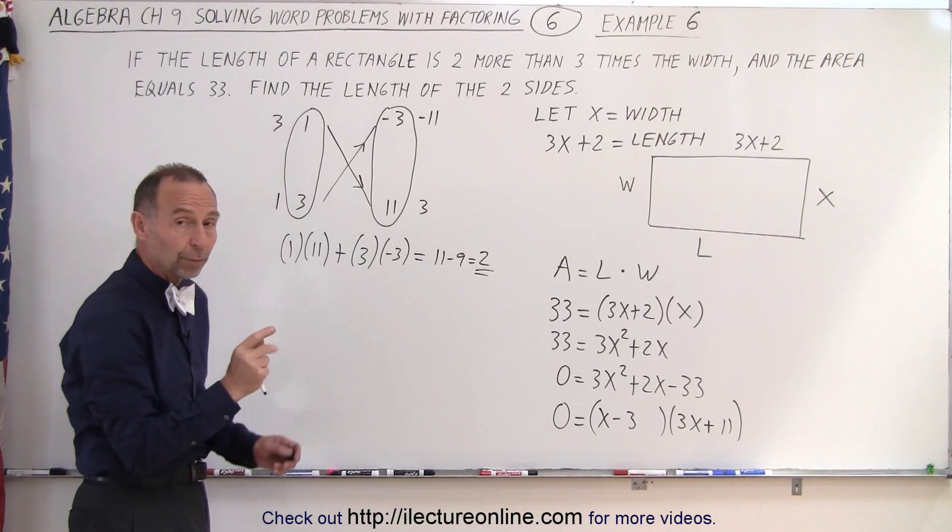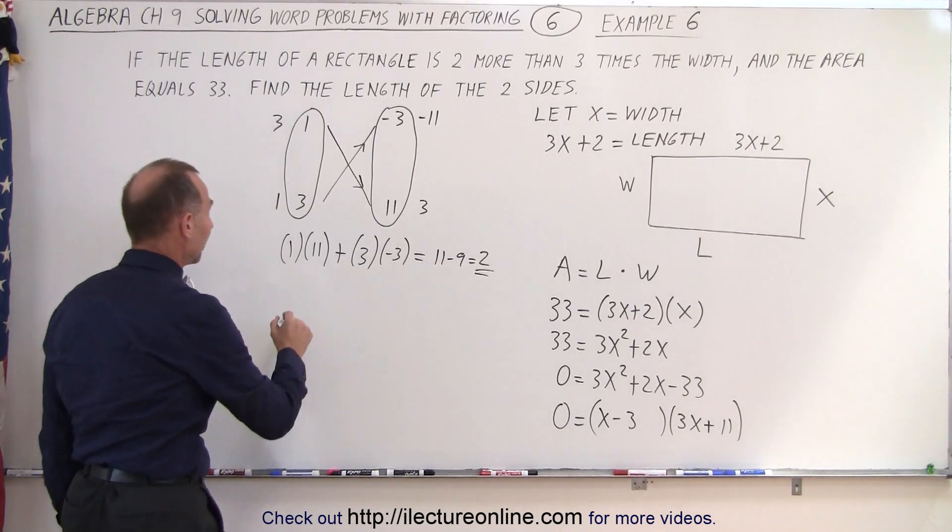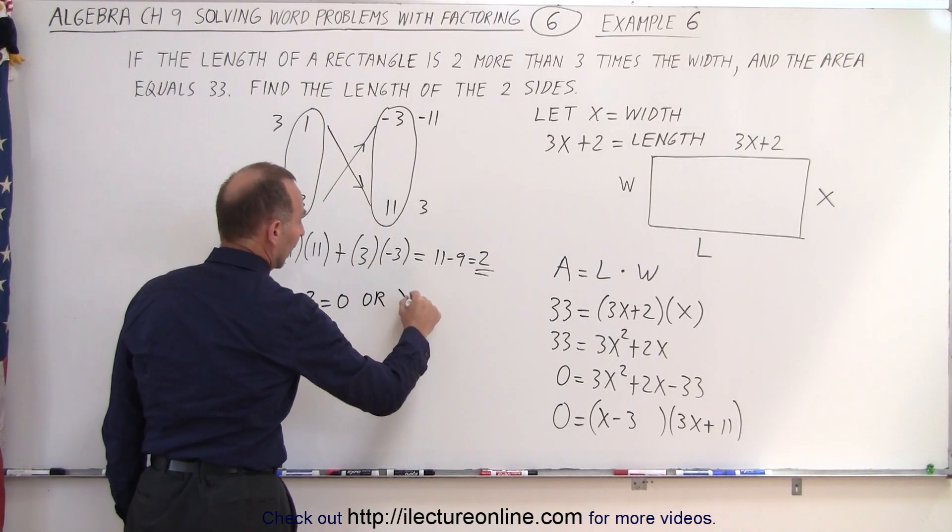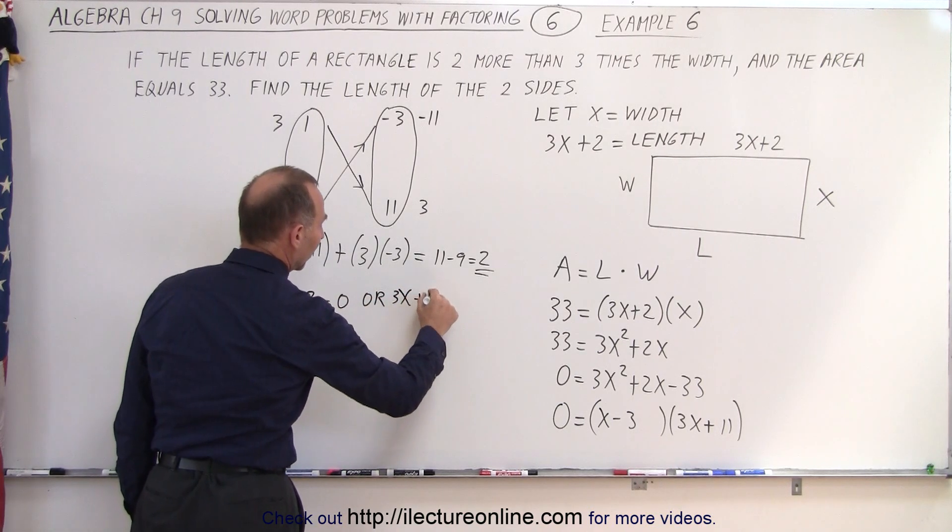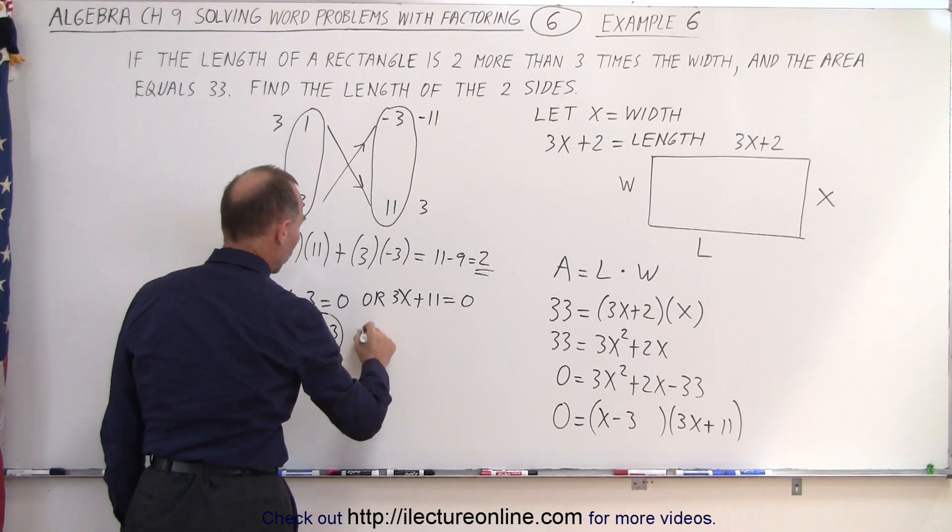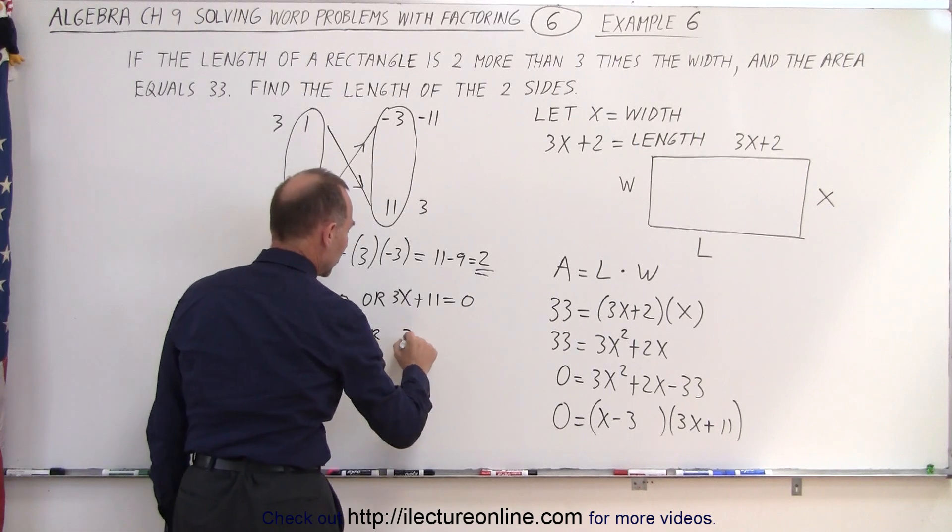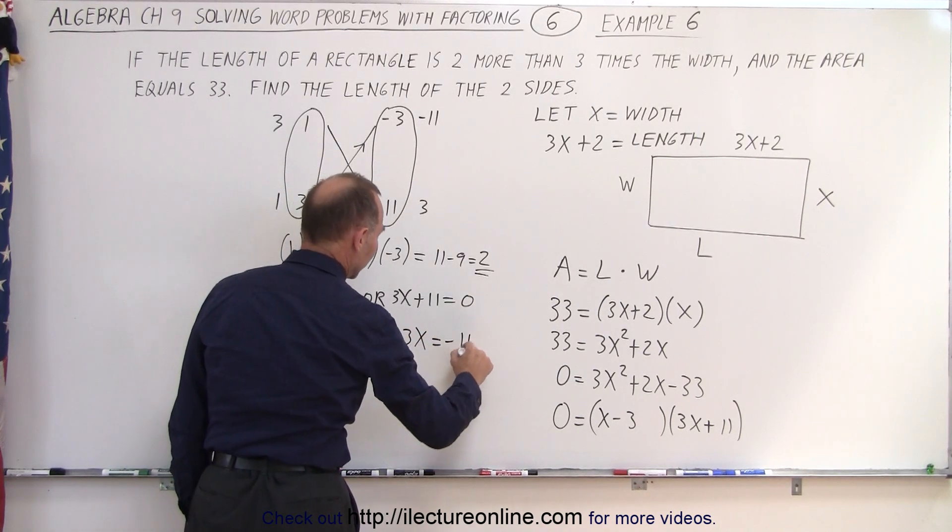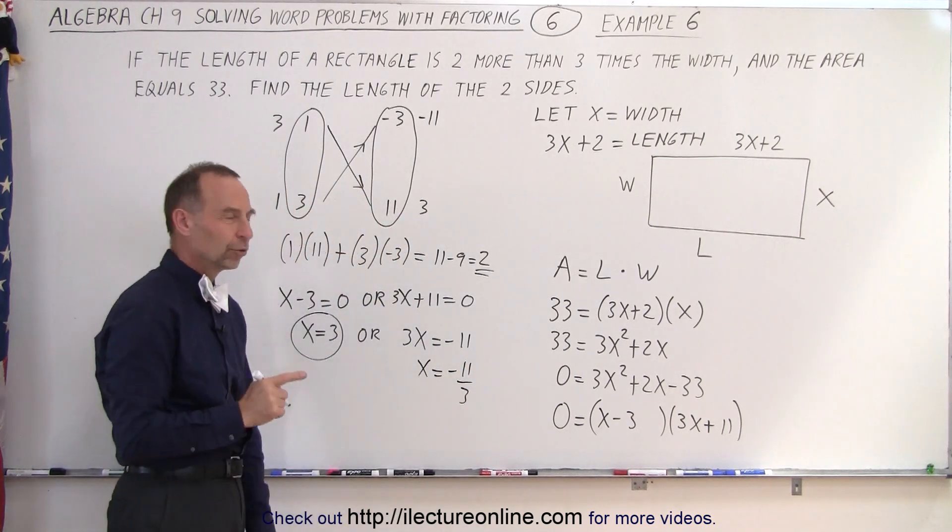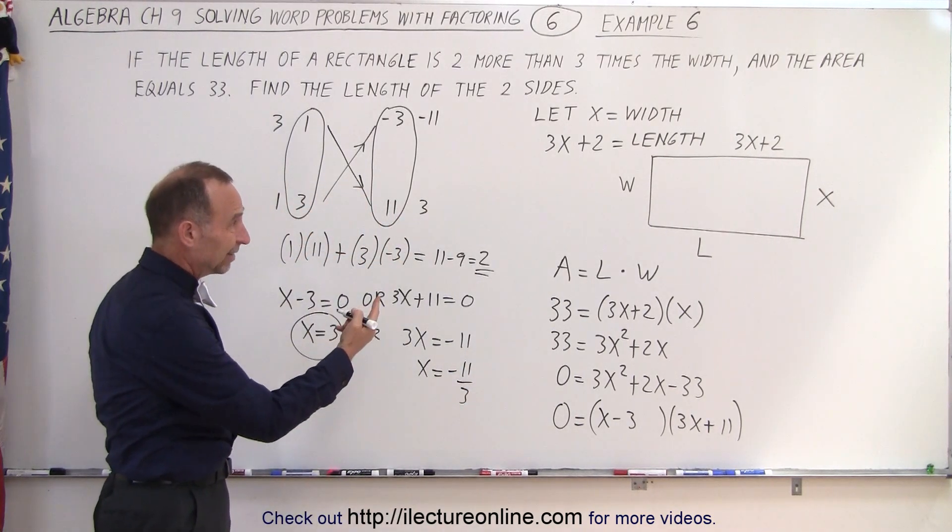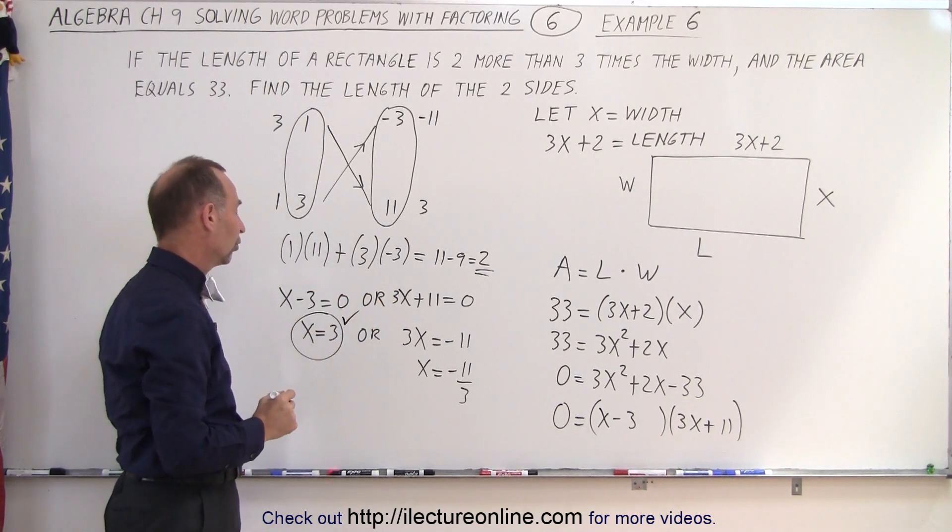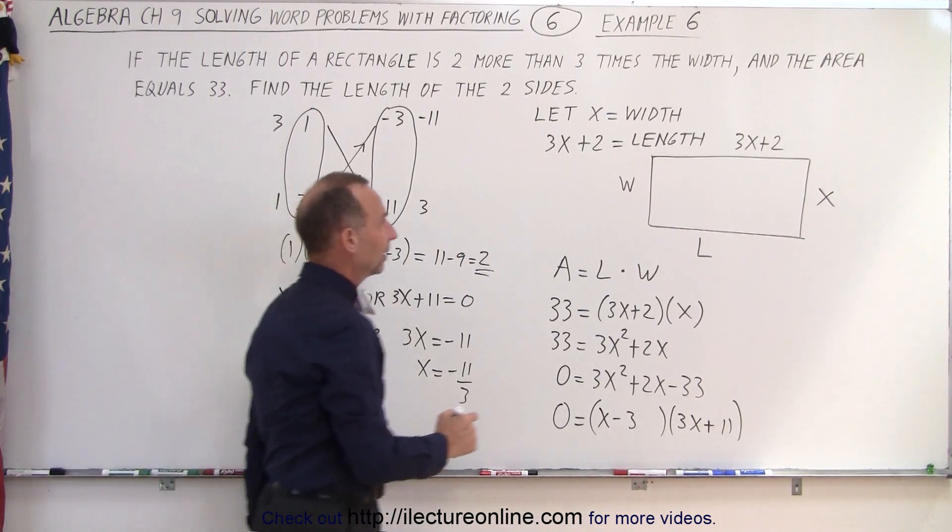If we have two binomials multiplied together, giving us zero, that means x minus three equals zero, or 3x plus eleven equals zero, which means that x is equal to three, or 3x equals negative eleven, which means that x equals negative eleven over three. But this is not a possible solution, because the width cannot equal a negative number, so it must be this part of the solution.